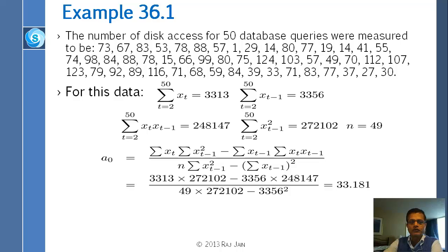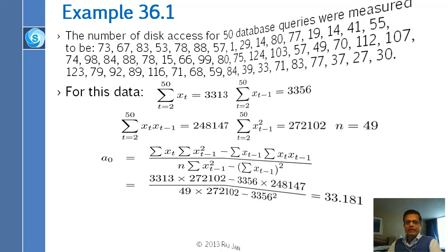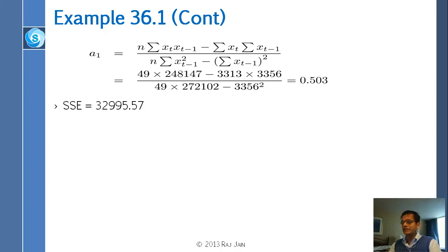All the summations run from t = 2 to 50, and the n you use is 49. Don't forget this: the number of observations is 50, but in calculations requiring n, use n = 49 because you lose one observation — you cannot predict x1. From there the rest is straightforward: look up the formulas from the regression chapter to find a0 and a1. The sum of squared errors comes out to 32,000, which is the lowest possible for any a0 or a1. Everything from regression applies here.